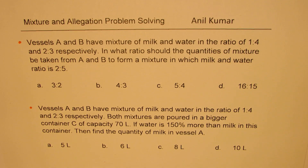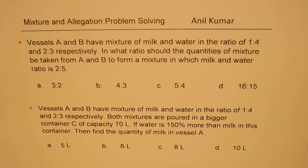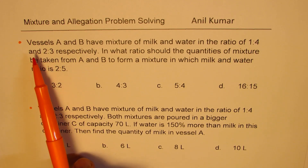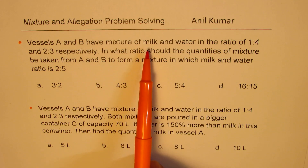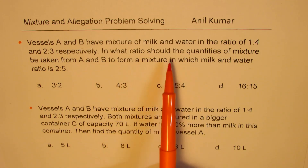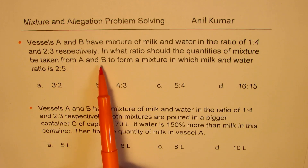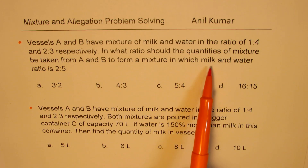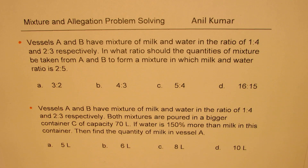I have taken two related questions. These are multiple choice questions — very popular from many test points of view, and sometimes you are required to answer them within a few minutes. The question is: vessels A and B have a mixture of milk and water in the ratio of 1 to 4 and 2 to 3 respectively. In what ratio should the quantities of mixture be taken from A and B to form a mixture in which milk and water ratio is 2 to 5? Four choices are given.